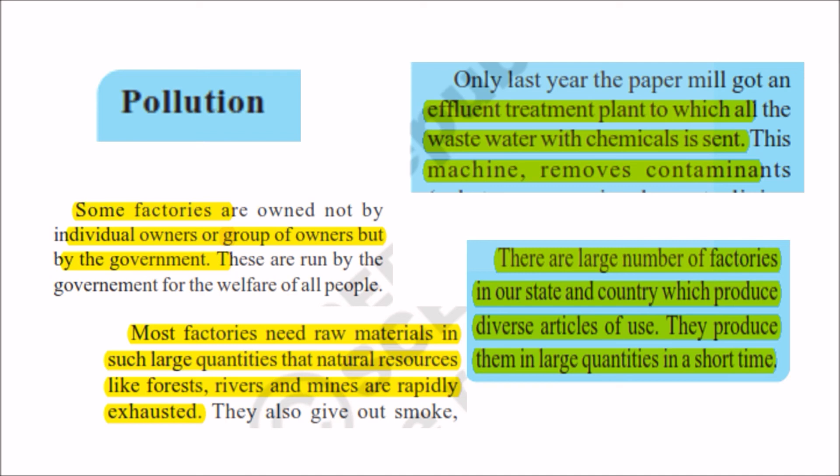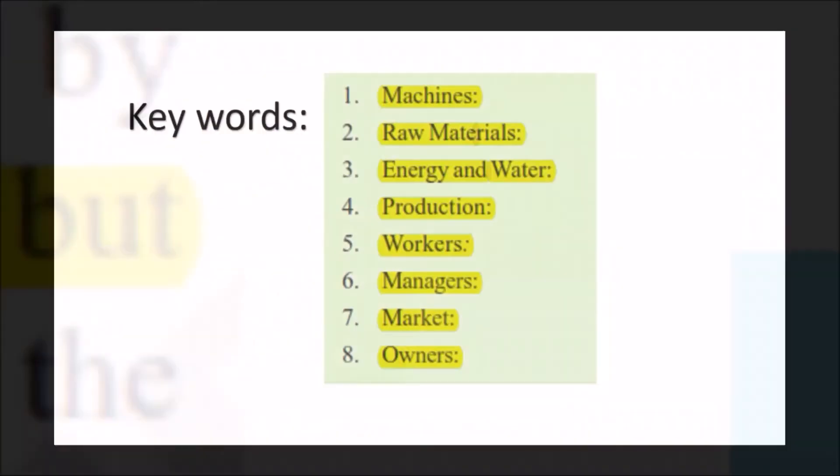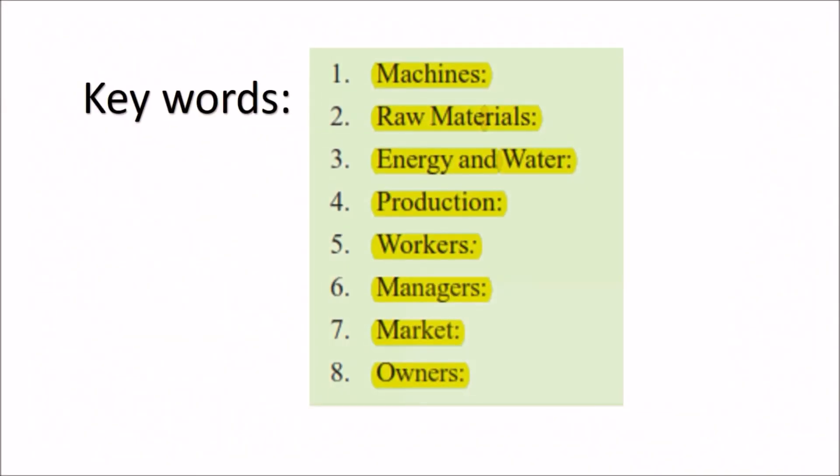Key words in this chapter are: Machines, Raw Materials, Energy and Water, Production, Workers, Managers, Market, and Owners. That is all we have in this chapter.